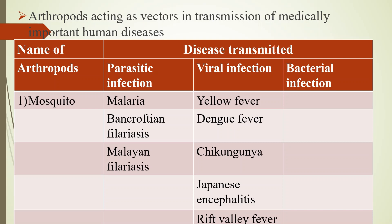Arthropods act as vectors in the transmission of medically important human diseases. First, mosquitoes — which transmit parasitic infections like malaria, Bancroftian filariasis, and Malayan filariasis. Anopheles transmits malaria. A wide range of mosquitoes transmit filarial parasites depending on geographic area. In Africa, the most common vector is Anopheles, and in America it is Culex. Aedes and Mansonia transmit the infection in the Pacific and Asia.